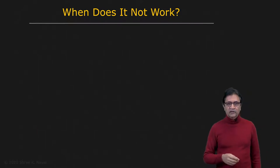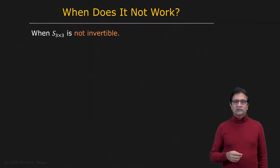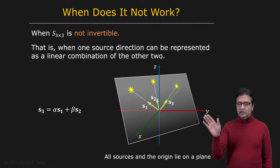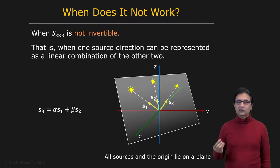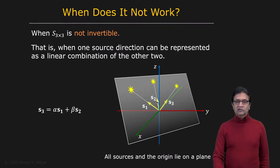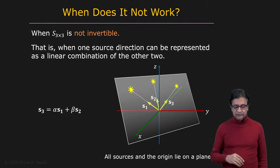When does this approach not work? It does not work when the source matrix S, which is three by three, is not invertible. That happens when the light sources lie on a plane that includes the point of interest. In that case, the vectors S1, S2, and S3 all lie on the same plane, meaning any one can be expressed as a linear combination of the other two — so the rows of S are linearly dependent and it's not invertible.